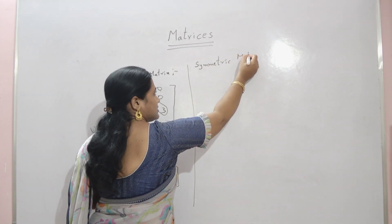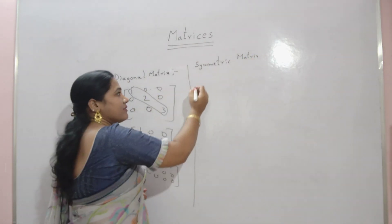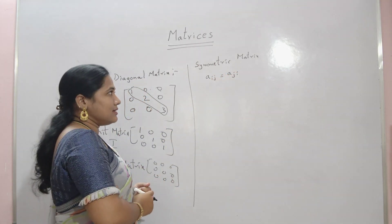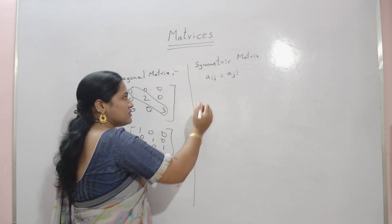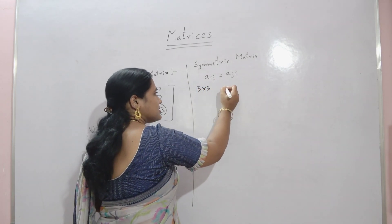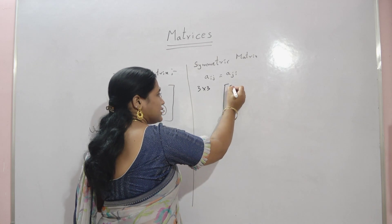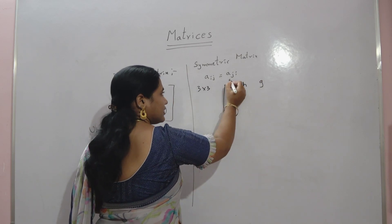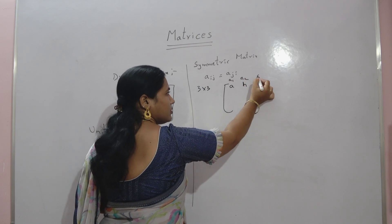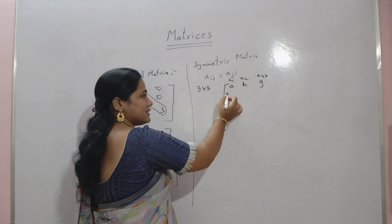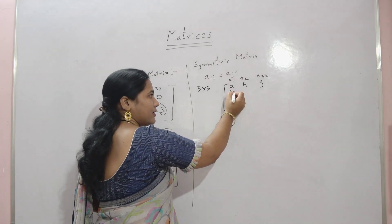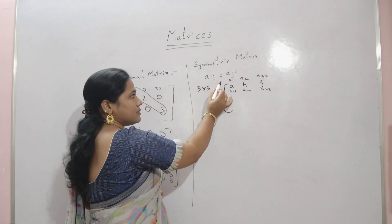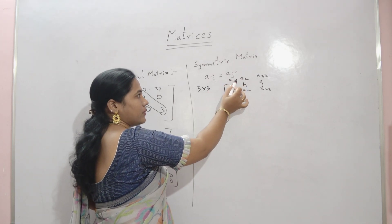The next one is a symmetric matrix. In a square matrix, if Aij equals Aji, then the matrix is called a symmetric matrix. Take a 3 by 3 matrix. The elements are A11, A12, A13 in the first row, and A21, A22, A23 in the second row. According to the symmetric matrix condition, A12 and A21 are the same — both are H.